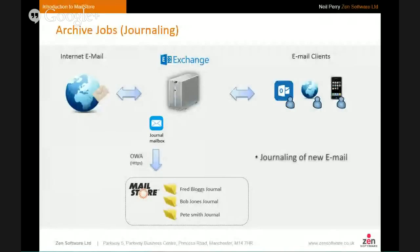Let's look at the actual archiving jobs. I generally recommend starting with a journaling job. The key reason for journaling is to take a copy of email as it arrives in Exchange. We configure Exchange to perform the journaling — it takes a copy of all email flowing in and out and puts it into a designated journal mailbox. Then in MailStore we set up a journaling archive job to collect email from that journal mailbox. The connection method is over HTTPS, simulating an Outlook Web Access connection, so the MailStore server can do this from anywhere that has OWA access.